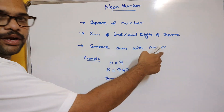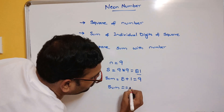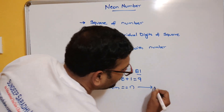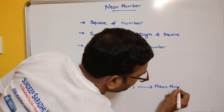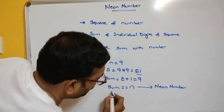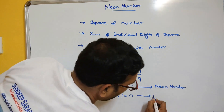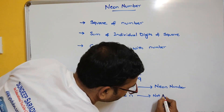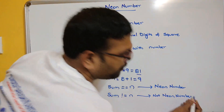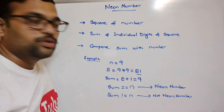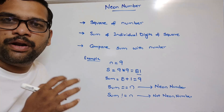So 8 + 1 = 9. Now compare the sum with the number: sum = 9 and n = 9. Since sum == n, it is a neon number. If sum is not equal to n, it is not a neon number.